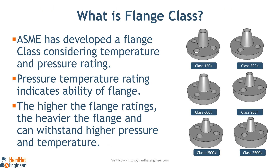Flange class refers to the pressure-temperature rating of a flange. In simple terms, it tells you the maximum pressure and temperature that the flange can handle under specific operating conditions. Flange classes are typically represented by numerical values such as 150, 300, 600, 900, 1500, or 2500. These numbers indicate the flange pressure rating in pounds per square inch. The higher the class number, the higher the pressure the flange can withstand, due to a heavier flange body, as you can see here in the image.